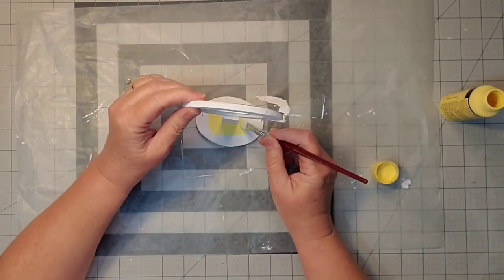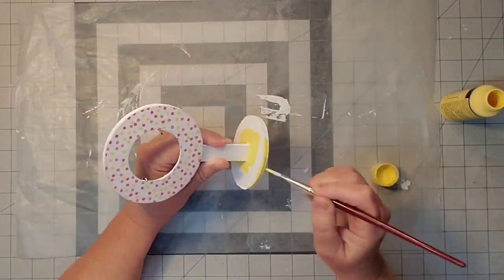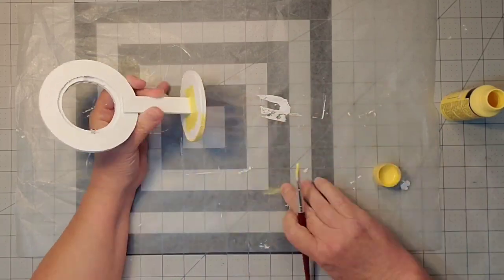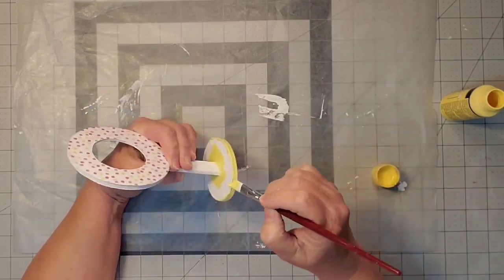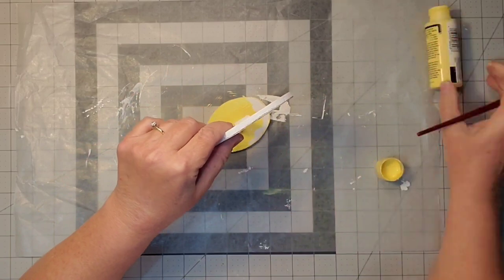For this bottom section, I'm going in with my Daybreak yellow acrylic paint and giving it a good coat on the edges, the sides, and the bottom as well.